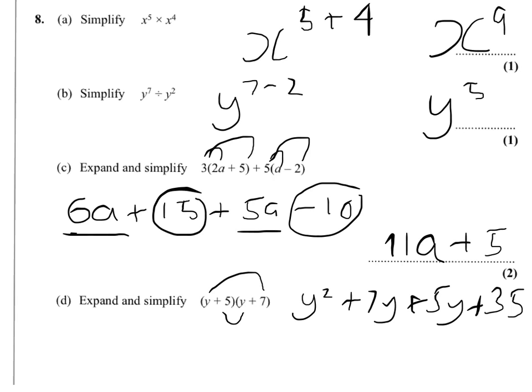Now once it's simplified, you're going to need to bring together the y's. So 7y and 5y is 12y plus 35.